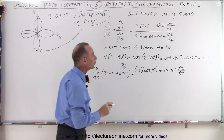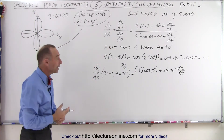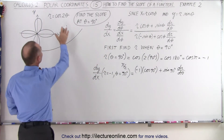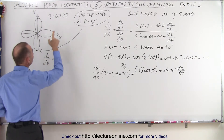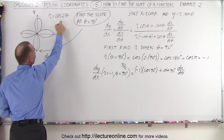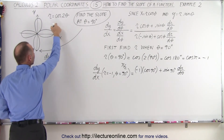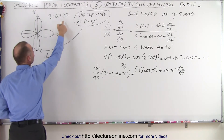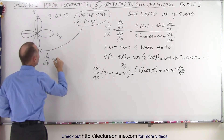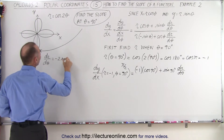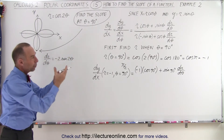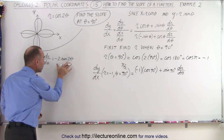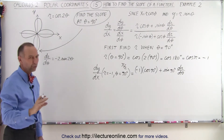Instead of leaving dr/dθ as is, we can go ahead and find what dr/dθ equals. The derivative of r = cos(2θ) — since the derivative of cosine is negative sine — gives us dr/dθ equals minus 2 times the sine of 2 theta. So we can then replace dr/dθ with that expression.